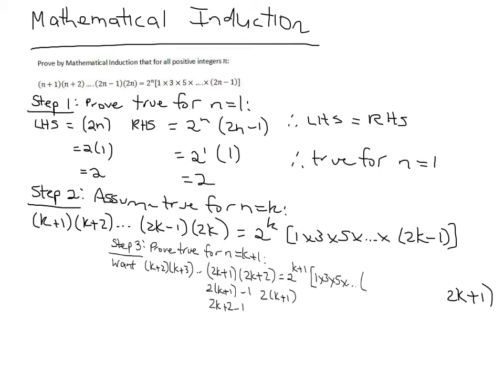That's what we want to prove. Now, having a look at this assumption here. That's what we're assuming, and we're allowed to use it. So the assumption is k plus 1, k plus 2, up to 2k equals this.